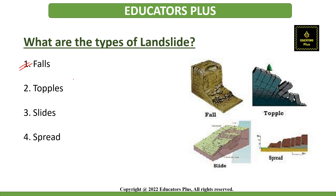The first is falls. Falls basically happen due to the abrupt movements of masses of geological materials such as rocks and boulders that become detached from the steep slopes or cliffs. The next is topples, which happen due to the forward rotation of a unit or units about some pivotal point below or low in the unit, under the action of gravity and forces exerted by adjacent units or by fluids in cracks.